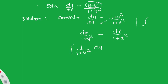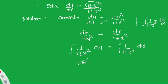Integrating the left side with respect to y and the right side with respect to x: integration of 1/(1 + y²) is tan⁻¹y, and integration of 1/(1 + x²) is tan⁻¹x. So we get tan⁻¹y = tan⁻¹x + C.